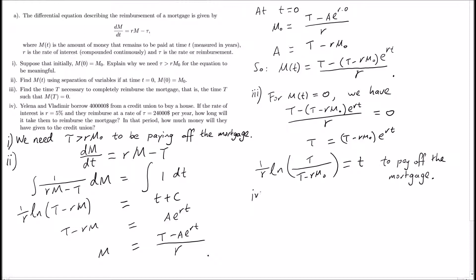For part 4, they give us some specific numbers for interest rate, the total mortgage payment, and yearly payment. We have to figure out the time taken. This is done by substituting all the parameters into our last calculated equation.